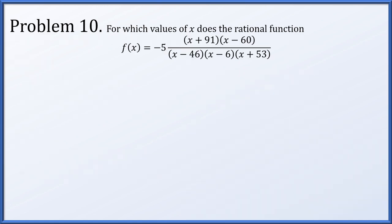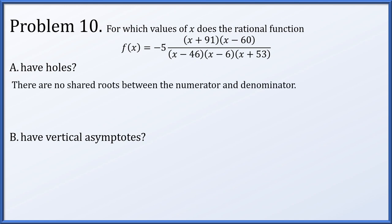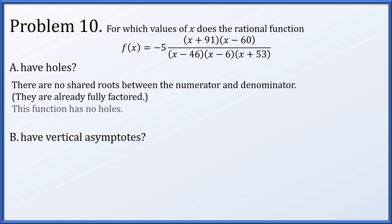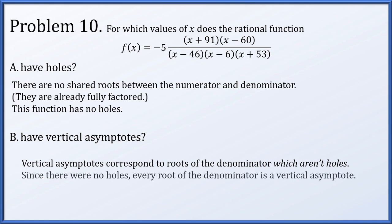In problem 10, f(x) equals negative 5(x plus 91)(x minus 60) divided by (x minus 46)(x minus 6)(x plus 53). There are no shared roots between numerator and denominator — we can see this quickly since no factors are identical and everything is fully factored. So the function has no holes. Vertical asymptotes correspond to roots of the denominator that are not holes, so x equals 46, x equals 6, and x equals minus 53 are all vertical asymptotes.